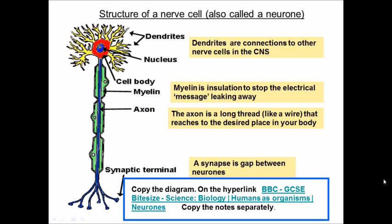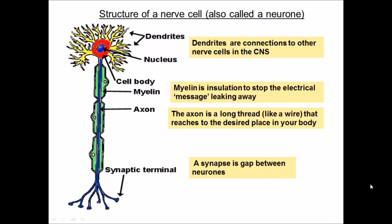The diagram here shows the structure of a nerve cell. Sometimes nerve cells are referred to as neurons and they have several different organelles — organelles basically just means parts. The first part is called a dendrite, and a dendrite is a connection to other nerve cells in the central nervous system. At the top you have the nucleus, which contains all the genetic information within the cell. The myelin sheath acts as an insulator, stopping other nerve cells from being stimulated, and it also speeds up the rate of the impulse travelling down the nerve cell. The axon is the physical part that actually carries the electrical impulse from one end of the cell to the other.